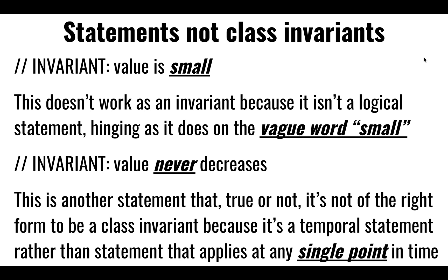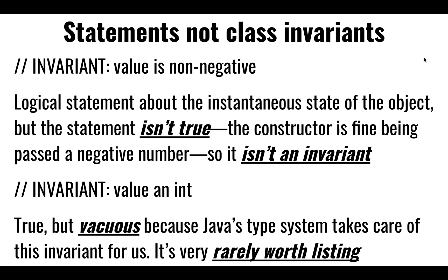We care about the instantaneous moment. At any one particular time and moment, does the current state hold the invariance? Not whether it's going to be true tomorrow or later — at this particular instance, can I validate that this is true? We only care about a single point, so 'never decreases' is not an invariance.